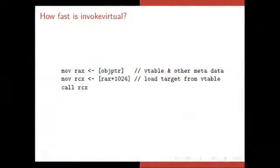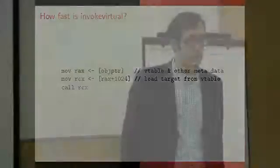So before we can start to discuss how fast the method handle invoke is, we have to understand how fast the ordinary invokes are. So we have the invoke virtual. Everybody knows how that works. We grab a virtual table from the Java object and we offset into that virtual table depending on which method we want to invoke. And we grab that target and we call it. So it takes two loads.